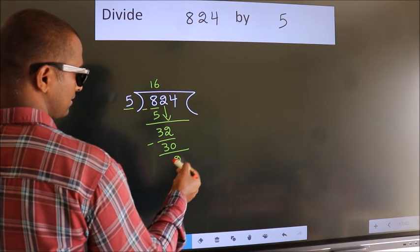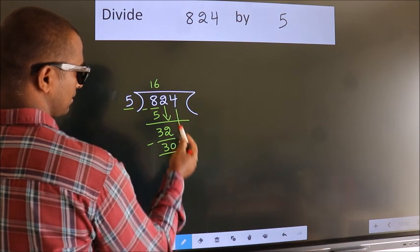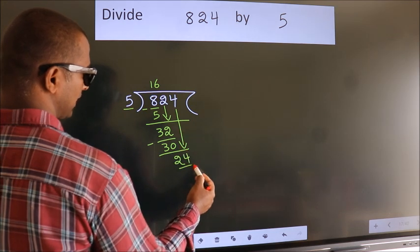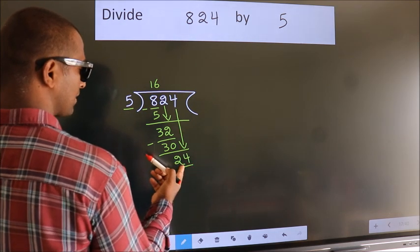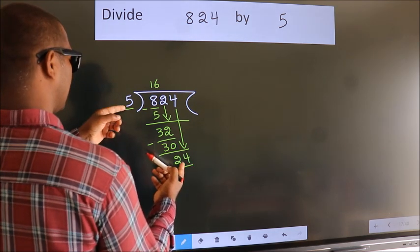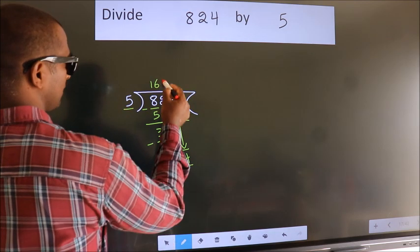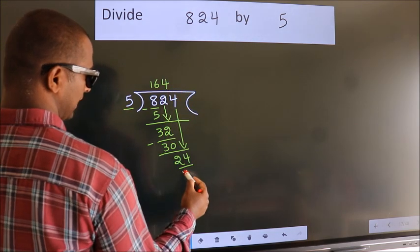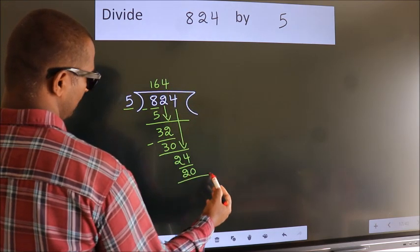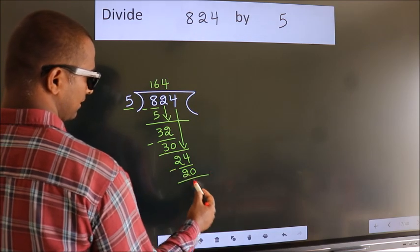After this, bring down the beside number. So, 4 down. So, 24. A number close to 24 in 5 table is 5, 4, 20. Now, we subtract. We get 4.